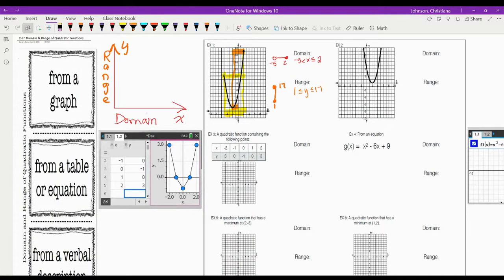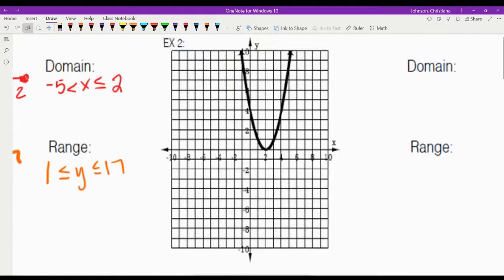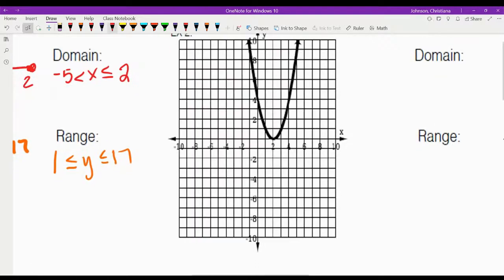For example 2, again, domain, we're going to go left to right. So we're going to look for the leftmost thing, and that just happens to be an arrow. So I'm going to draw a big arrow, because remember that arrow means that it just keeps going off the page. And then the last thing it sees is an arrow, so that goes to another arrow. So we have an arrow to arrow, which we know is all real numbers.